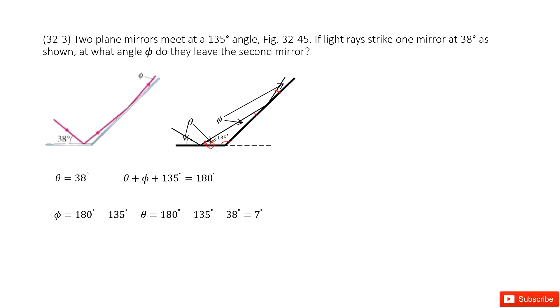So this is theta, this is phi. Now we can see in this triangle, we have theta plus phi plus 135 degrees equals 180 degrees.